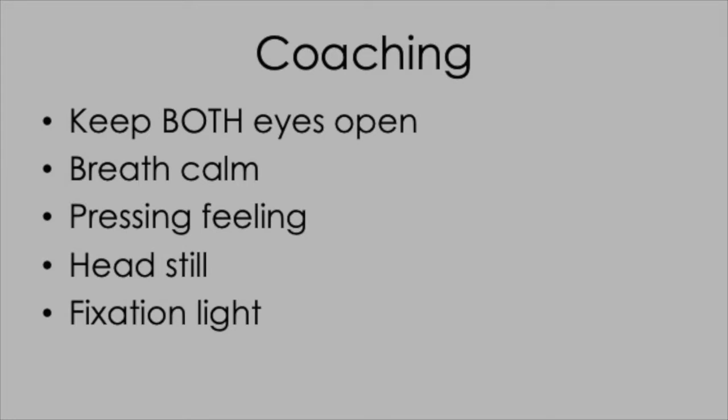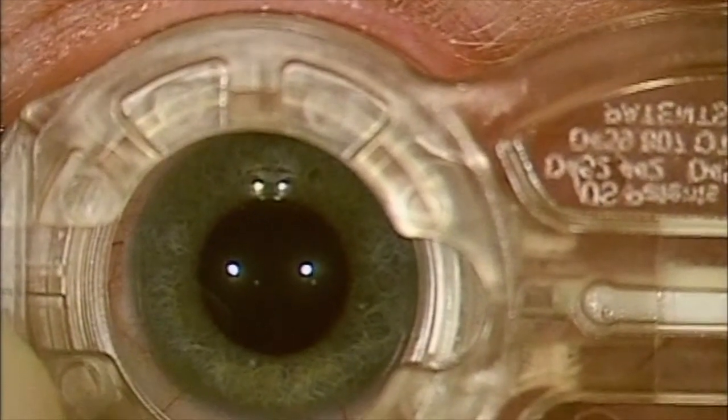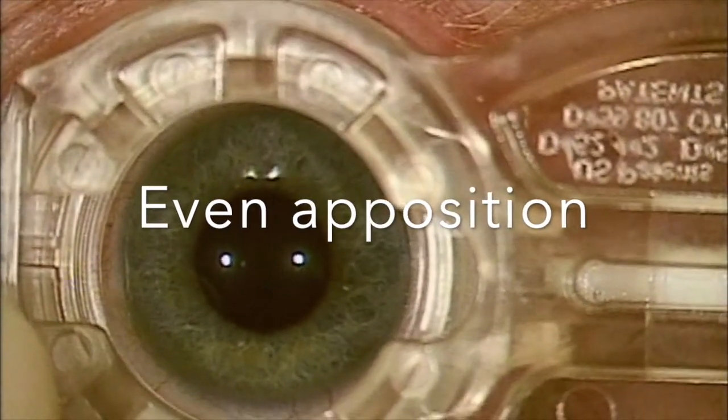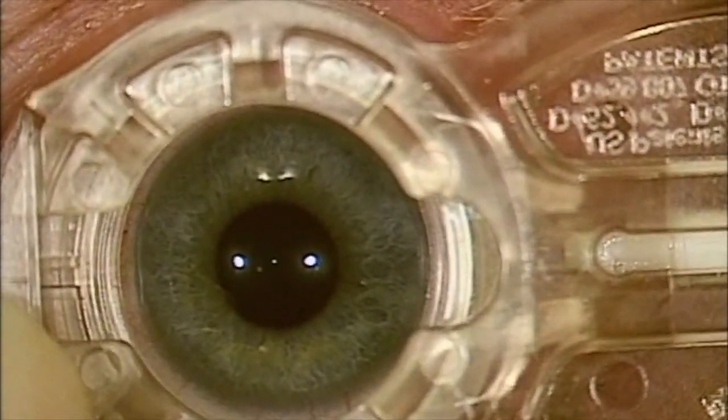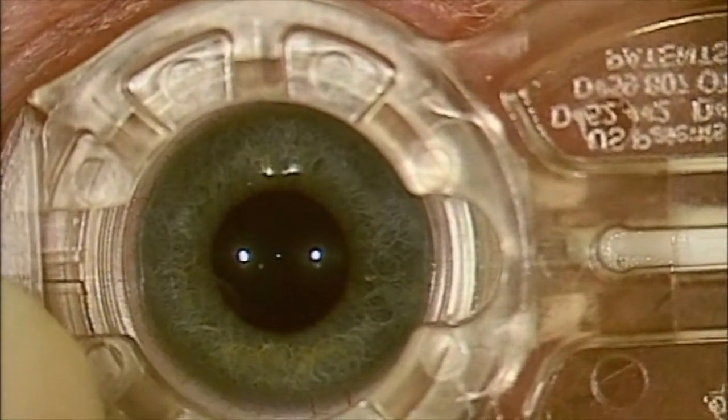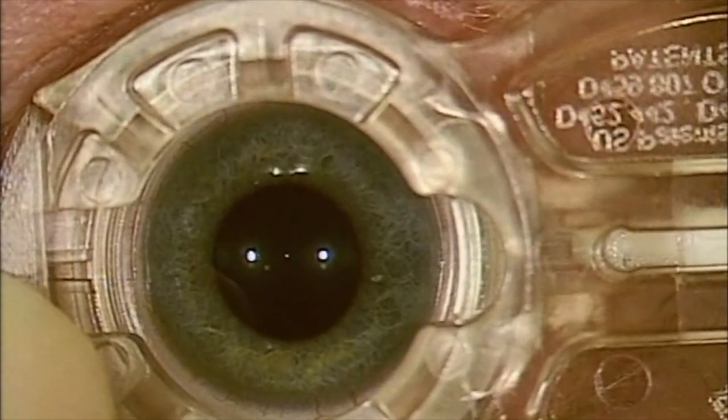Once you're happy with centration, it's very important to establish even apposition, because if you don't do that before you apply the vacuum, the eye can roll and you can lose the centration at that point.